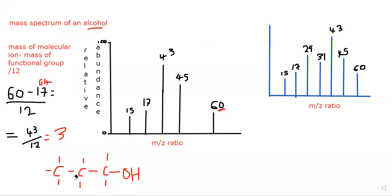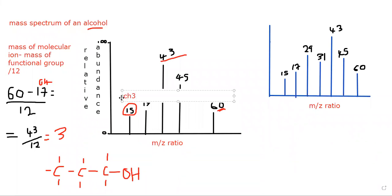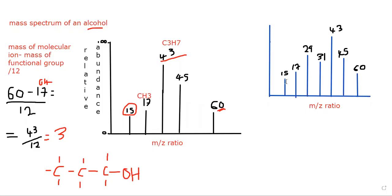So now we know we have propanol. What we don't know is if it's 1-propanol or 2-propanol. So 43 is a propyl group and 15 is a methyl group. On any mass spectrum, 15 is CH3. Once you see 43, it's propyl — C3H7.